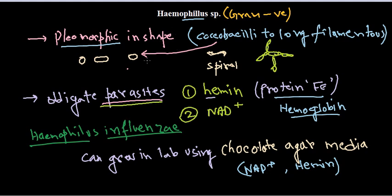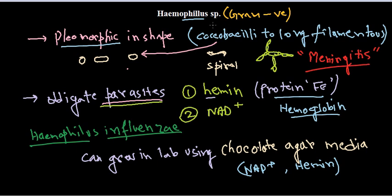Why are we bothering about Haemophilus species? Because this is a very dangerous species that can cause several diseases — from a simple mild fever, to sinusitis, epiglottitis, and most importantly, meningitis. A severe form of meningitis can be caused by Haemophilus species, making it clinically very significant.